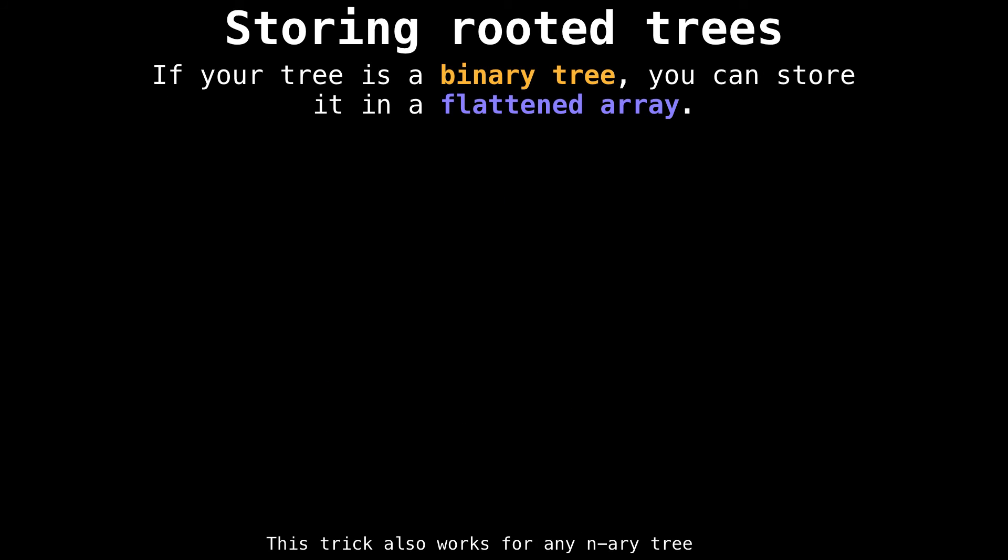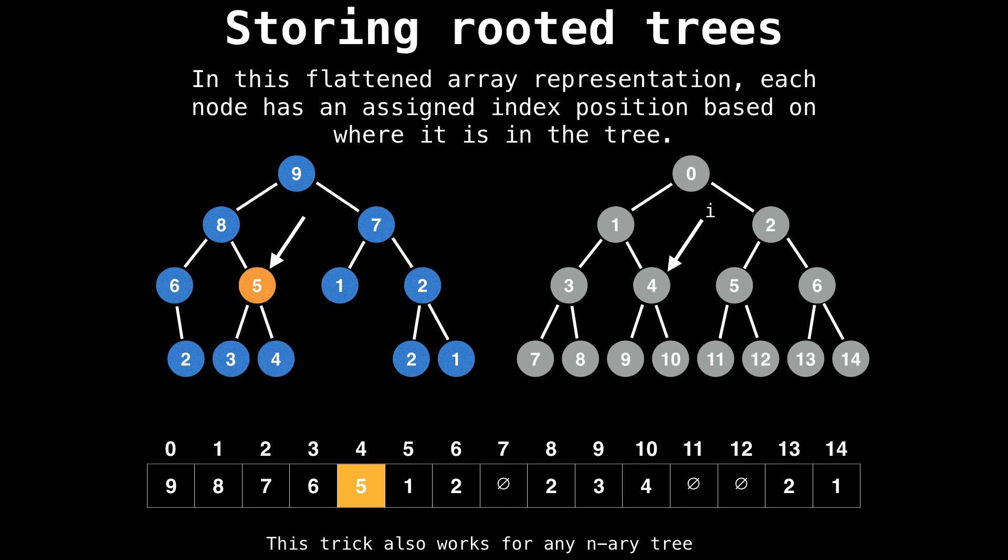Another really neat way of storing a rooted tree if it is a binary tree is as a flattened array. In the flattened array representation, each node has an assigned index position based on where it is in the tree. The thing to understand here is that the tree is actually an array; the diagrams are just a visual representation of what the tree looks like. For instance, the node with a value five in orange is associated with the index four in this array.